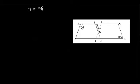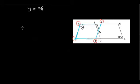To get the value of X in triangle OES, we have to find out angle ISK. Have a look at the problem. To get the angle ISK, we have to consider parallelogram RISK. Let us assume angle ISK to be Z.